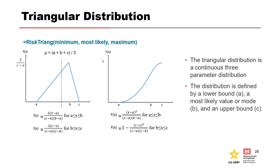A triangular distribution is defined by a lower bound, an upper bound, and a most likely value. The mean is equally sensitive to each parameter and equals the average of those three values. This distribution has no theoretical basis but derives its statistical properties from its geometry. It is popular during team elicitations because of its simplicity, versatility, and the intuitive nature of its defining parameters. It should be noted that the triangle shape will usually overemphasize the tails and underemphasize the shoulders of the distribution compared with more natural distributions. A best estimate probability should never be taken as the most likely value — it should be the mean.